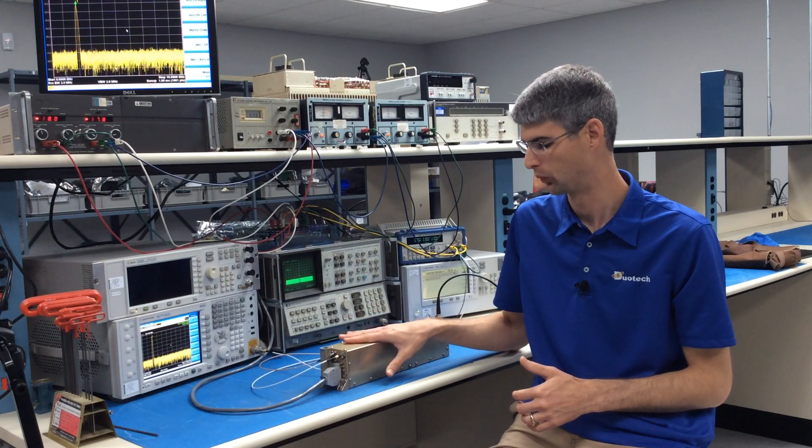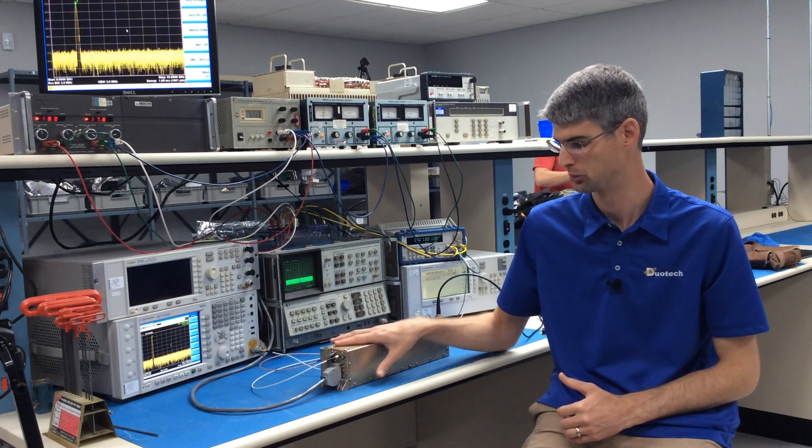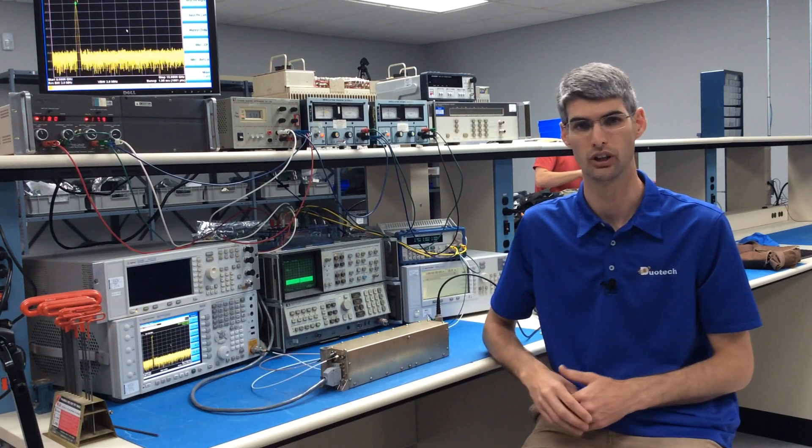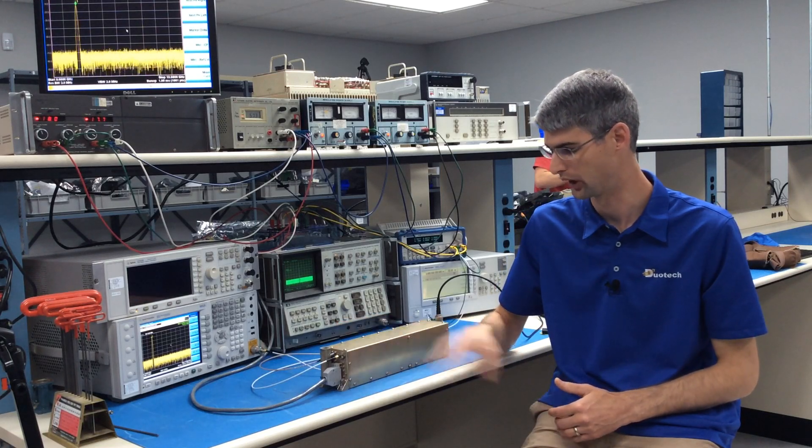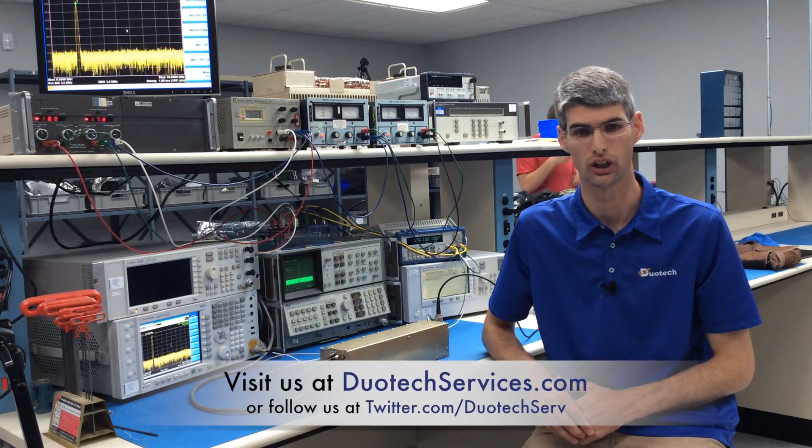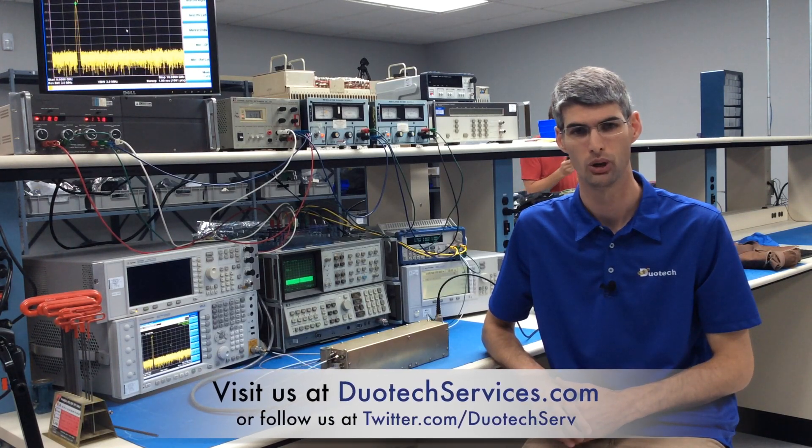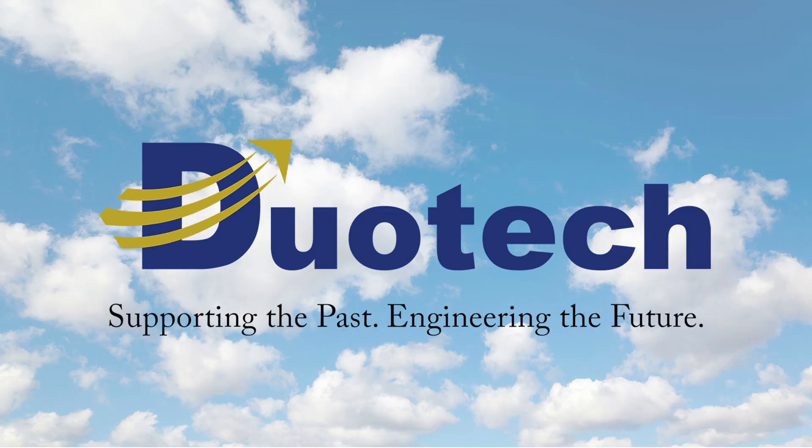So, that's how we were able to use a frequency source and a signal analyzer to gain some idea of how this particular unknown piece of equipment operated. This is the type of thing that we do at Duotech Services when we need to characterize an item to know how to compare it to other units down the road. For more information on what we do, check us out at duotechservices.com or follow us on Twitter.